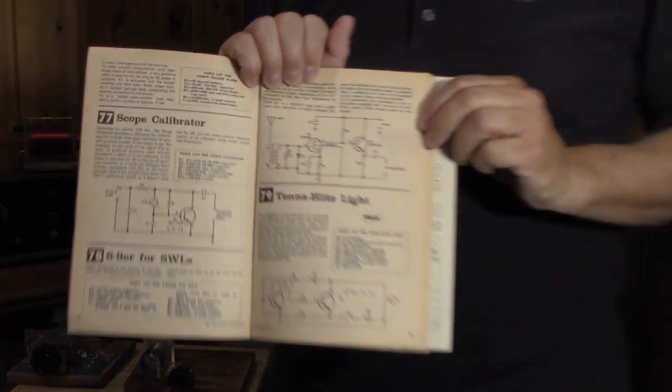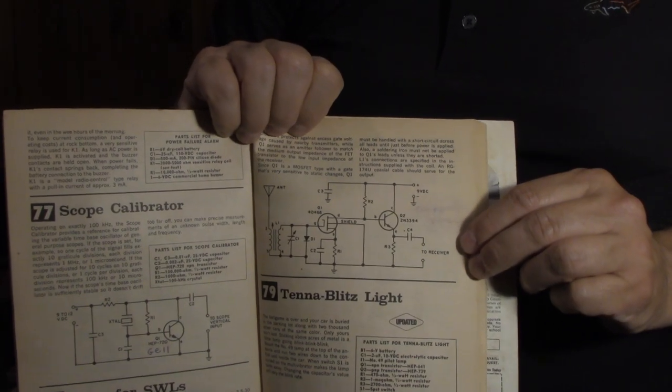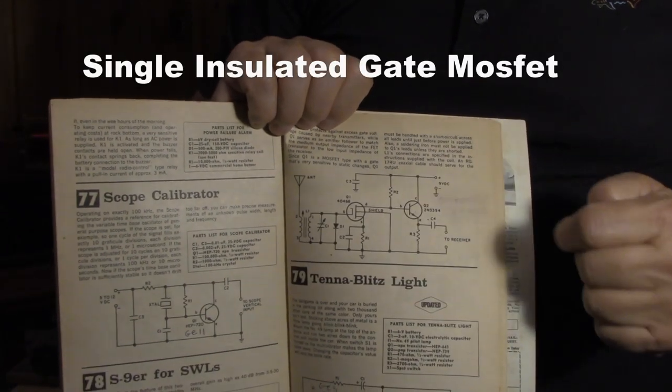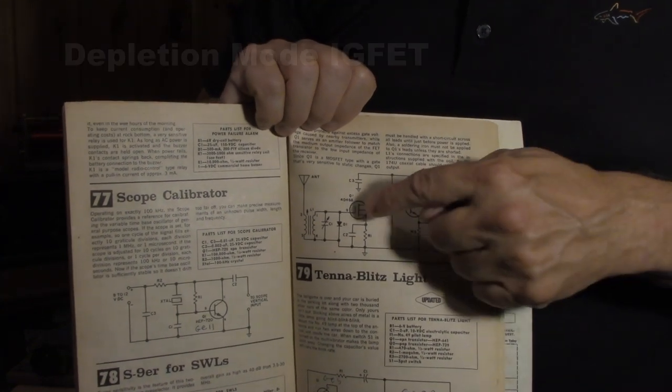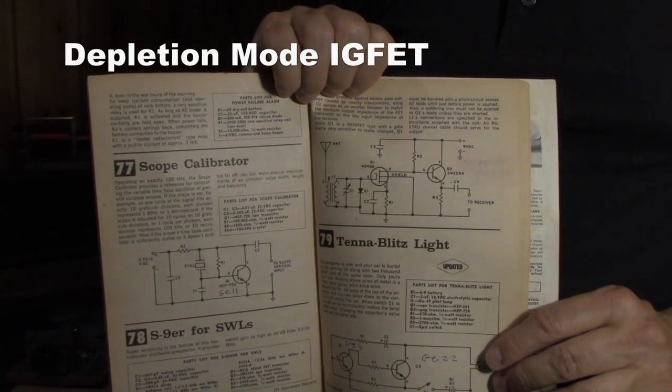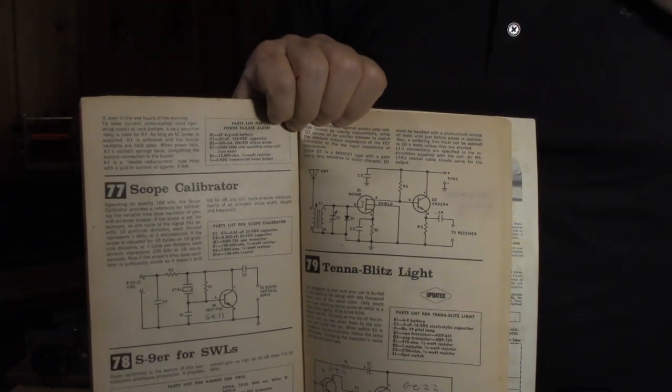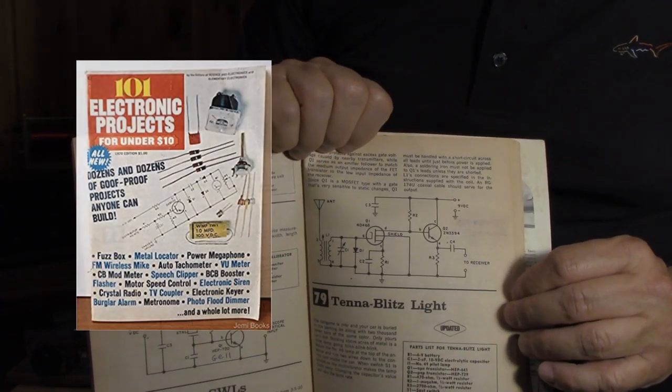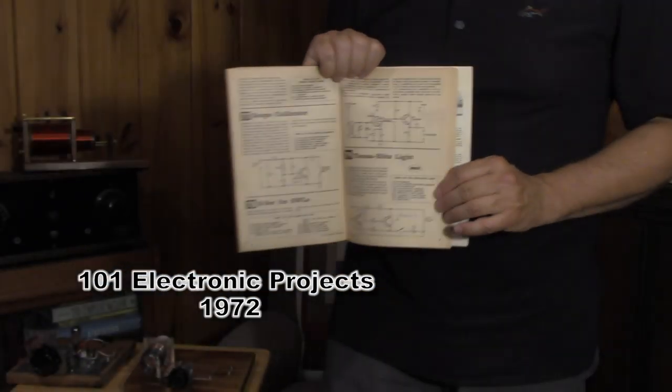The MOSFET showed up in the late 60s and early 70s and quickly replaced the transistor for the first stage of the preamp. The single gate, or IGFET, isolated gate field effect transistor, IGFET, insulated gate field effect transistor, became the front end of choice in the 70s.